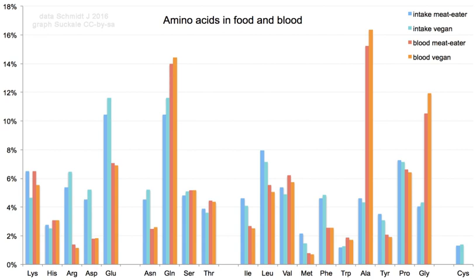The 20 amino acids encoded directly by the genetic code can be divided into several groups based on their properties. Important factors are charge, hydrophilicity or hydrophobicity, size, and functional groups. These properties are important for protein structure and protein-protein interactions. The water-soluble proteins tend to have their hydrophobic residues buried in the middle of the protein, whereas hydrophilic side chains are exposed to the aqueous solvent. The integral membrane proteins tend to have outer rings of exposed hydrophobic amino acids that anchor them into the lipid bilayer.